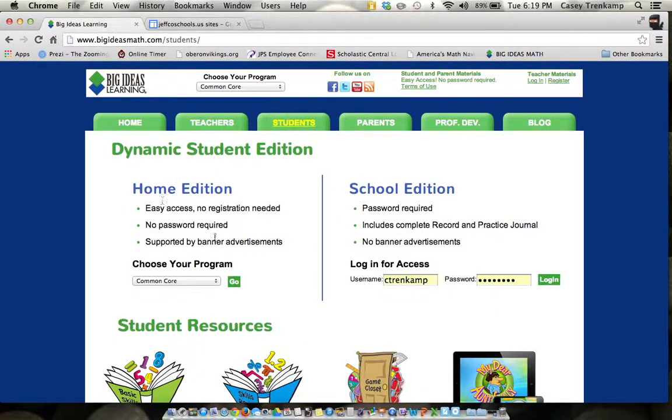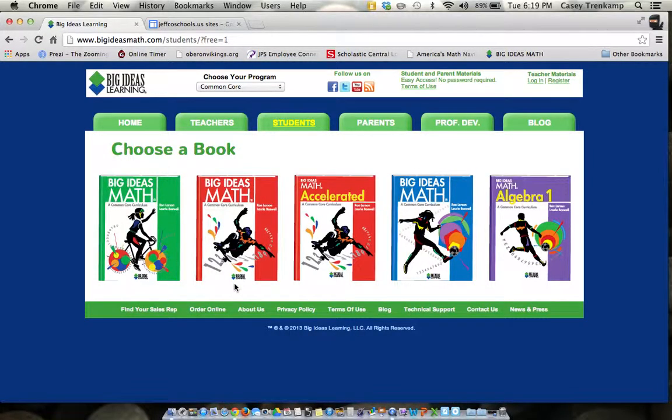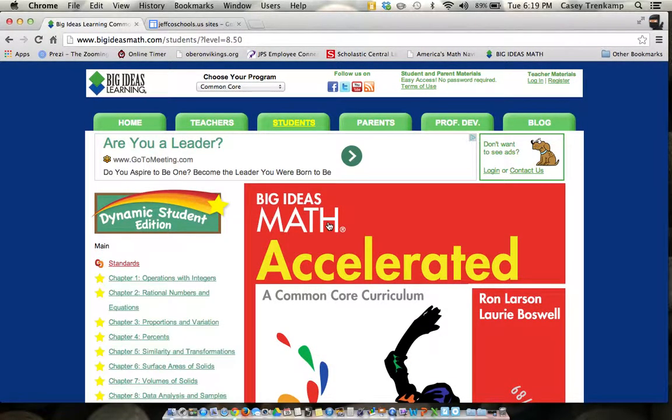Then we go into the home edition and we are called Common Core. So you click Common Core and press go, and it will bring you a couple choices of books. For Math 7, we are in this red Math Accelerated book. If you click on it, it will bring up all the content that you need for our Math 7 class.